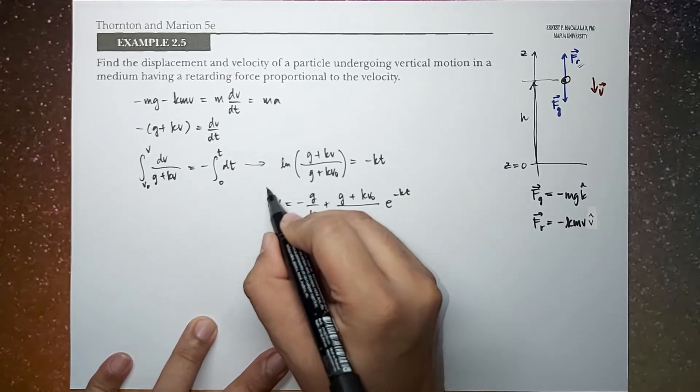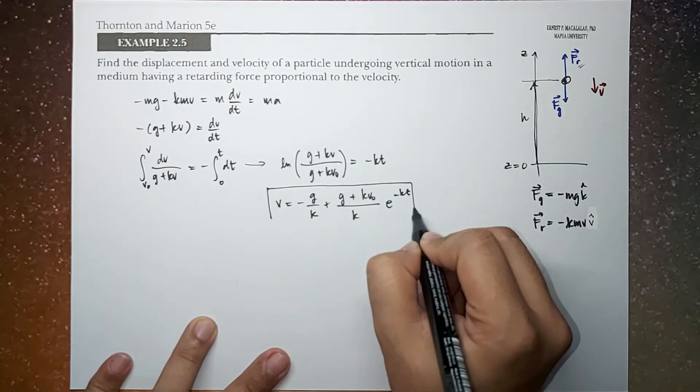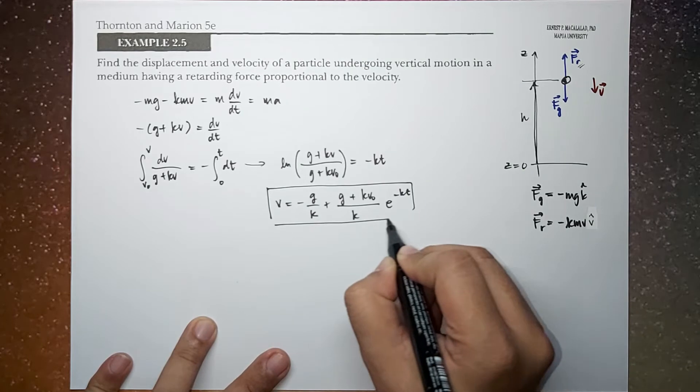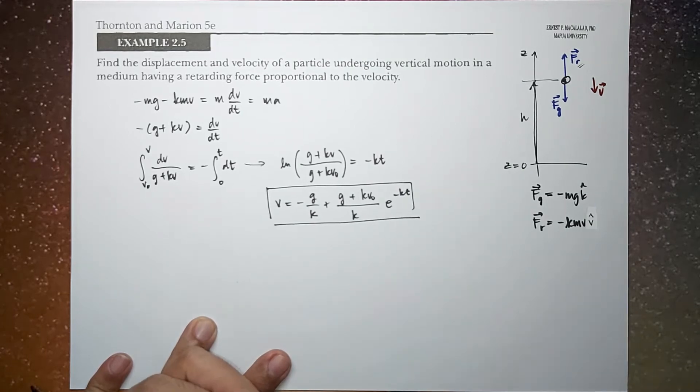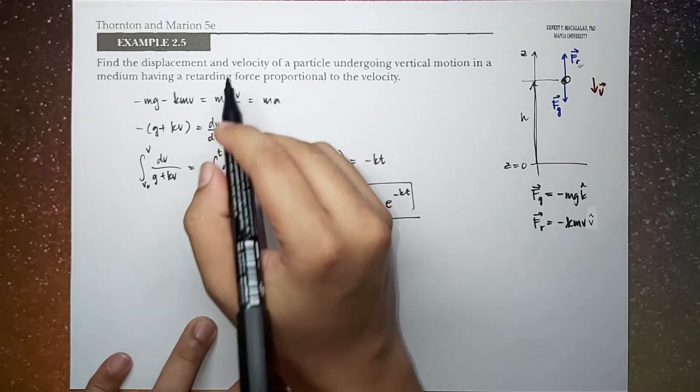This velocity function is the derivative of z with respect to time.